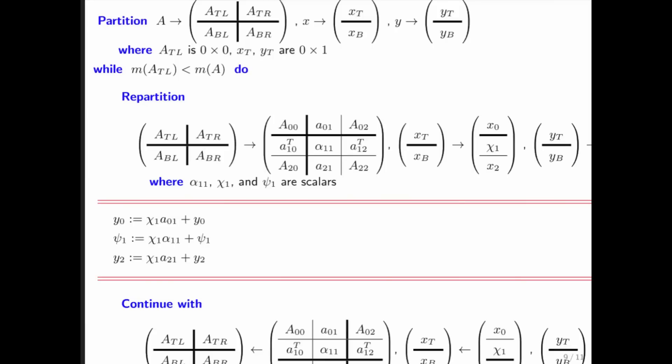Here's our algorithm again. All we need to do is replace this line right here by y_2 becomes chi_1. Now, what we were doing is multiplying times that. What we instead want to do is multiply by a_{1,2} transpose, adding the result of that to y_2.